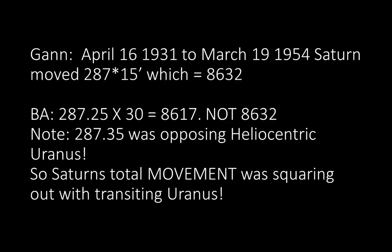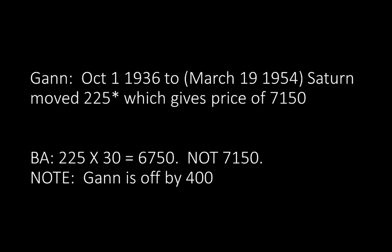So price, or that particular distance traveled, was squaring out with Uranus — a very unique concept. GAN, October 1, 1936 to March 19, 1954, Saturn moved 225 degrees, which gives a price of 7,150 B.A. 225 times 30 equals 6,750, not 7,150. Note, GAN is off by 400.